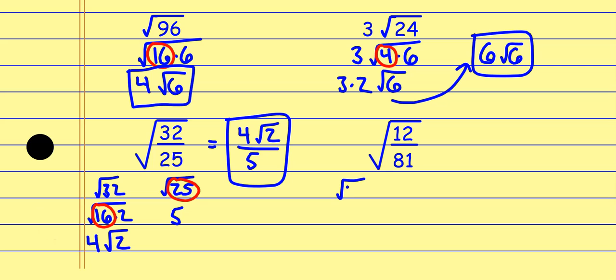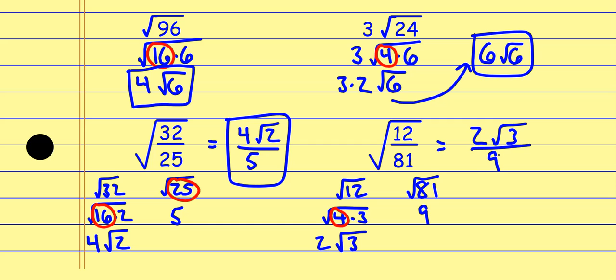For the last example, I'll do the square root of 12 and the square root of 81 separately. The square root of 81 is 9. For √12, there's a 4 in there — it's 4 times 3 — and the square root of 4 is 2. The square root of 3 can't be simplified, so it stays. That becomes 2√3 over 9. To summarize: with the factor tree (prime factorization) we look for pairs — every pair goes outside, anything without a pair stays inside. With the perfect square method, we find perfect squares that divide into the radicand, take the square root of each, and whatever's left stays under the radical.